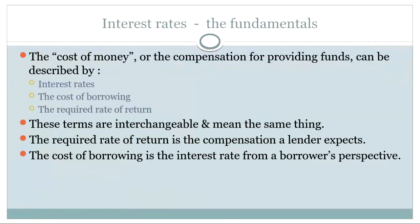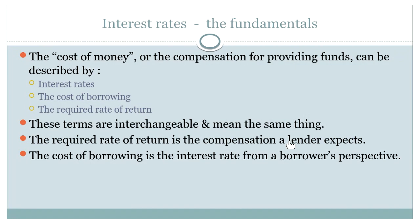So the cost of money or interest rates — which is the compensation that the lender gets for providing funds to the borrower — can be described as the interest rate, the cost of borrowing, or the required rate of return. All of that means the same thing. We've already seen that we can calculate our required rate of return by using our CAPM formula from the previous learning unit. It's important that you understand these terms are interchangeable and you don't get confused when reading through the textbook.